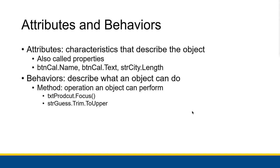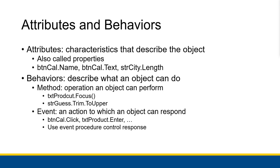Specifically, we have methods, which are operations that an object can actually perform. For example, the focus method of a lot of controls, or the trim and to-upper methods of a string — those are all methods of their respective classes. We also have events, which are actions to which an object can respond. Objects have a whole bunch of different events, like how the button has the click event or the text box has the enter or key press events. You use event procedures to actually control the response to an object's events.